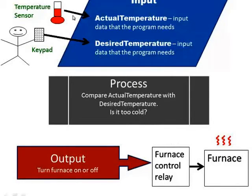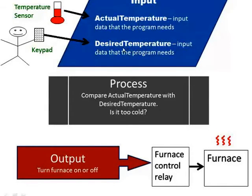In this system, the temperature sensor is an input device. Temperature sensor is a little piece of electronics. There are various kinds of temperature sensors, but we'll talk about some of those later in the course. So, the temperature sensor is the input device, and it's going to read a piece of information in, and we're going to store it in a place called actual temperature. That's our input data. So, it needs to know what the actual temperature is, in order to know whether to turn on the furnace. It also needs to know what temperature do we want it to be. That's our desired temperature. So, that's another piece of input data, and that comes from a device called a keypad, and a person.